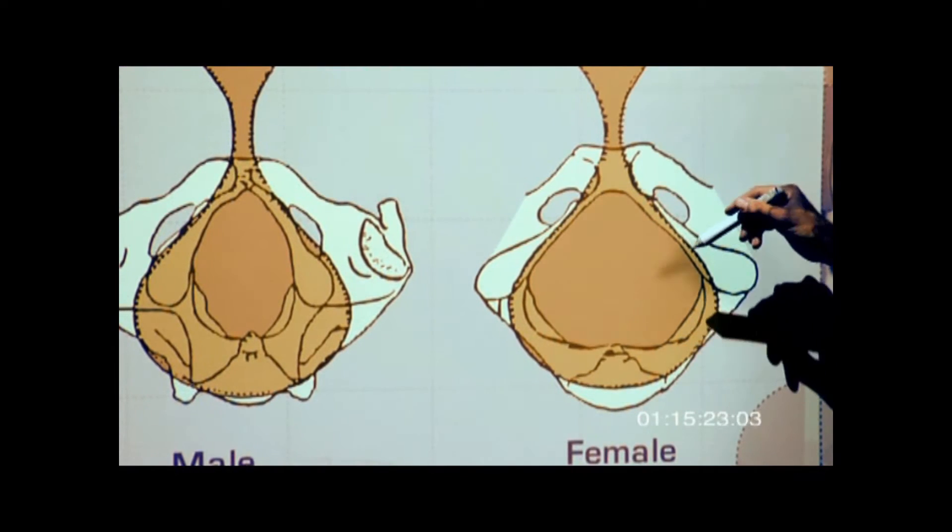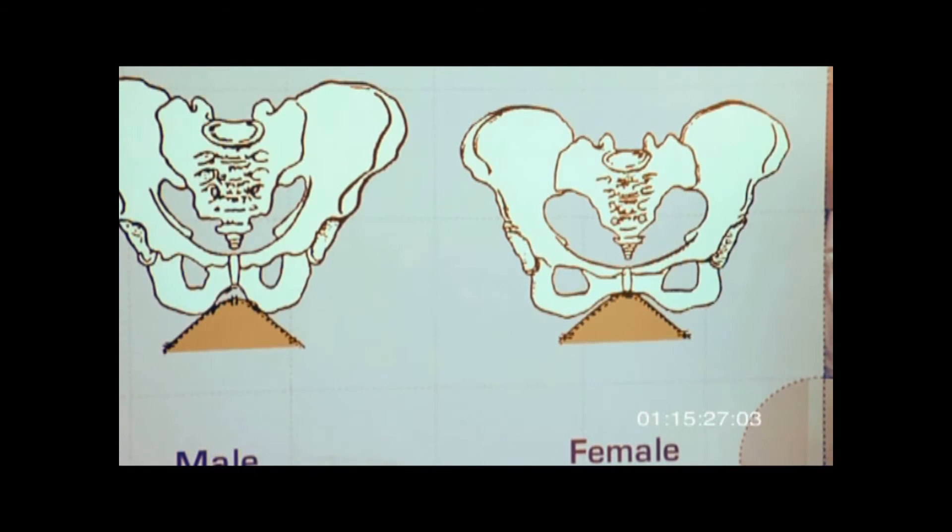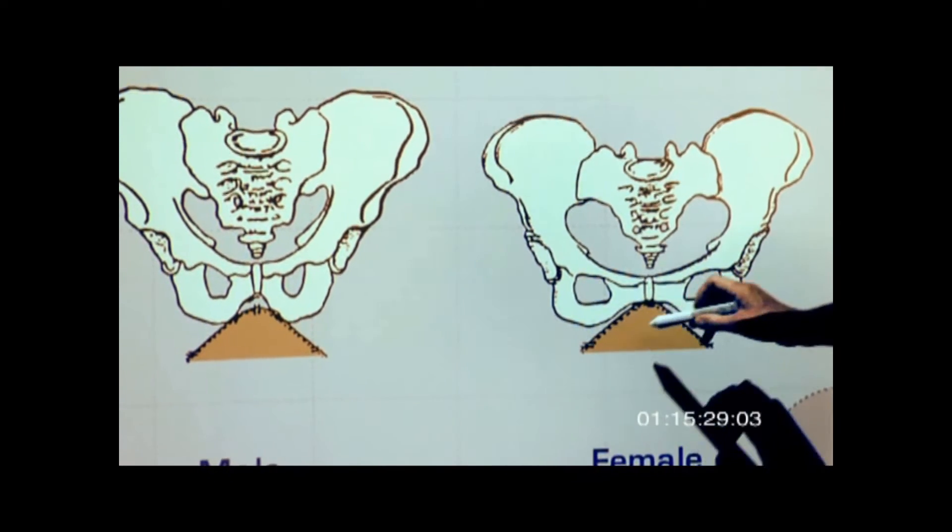What would happen if the female rides on the male saddle? From the front, you can see clearly where the most contact would be.